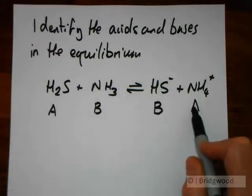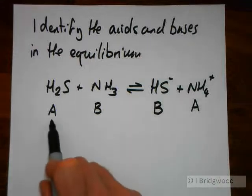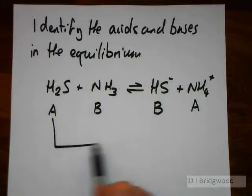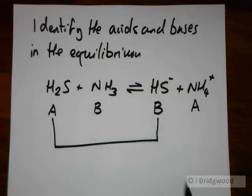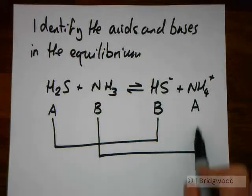And we can connect each of these as conjugate acid-base pairs. H2S being the conjugate acid of the base HS minus, and ammonia being the conjugate base of the acid NH4 plus.